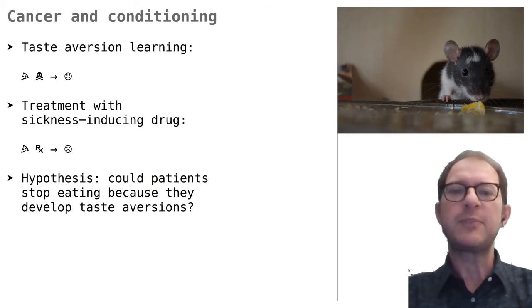As we know from the lesson on Pavlovian preparations, we sometimes give animals a bellyache to see how they learn to avoid tastes and flavors that may be associated with a bellyache. Bernstein realized that the conditioning trial in taste aversion learning is essentially identical to giving a patient a drug that induces nausea and vomiting. The parallels are illustrated here on the slide.